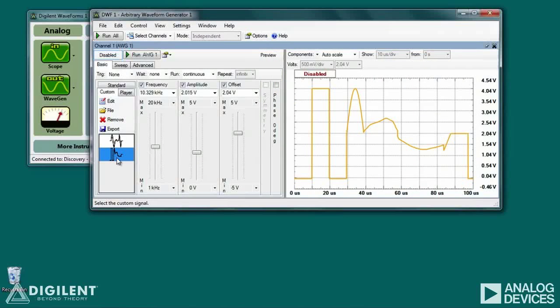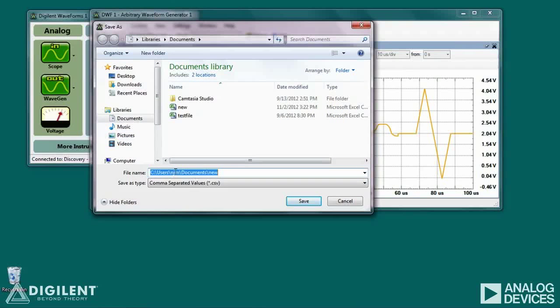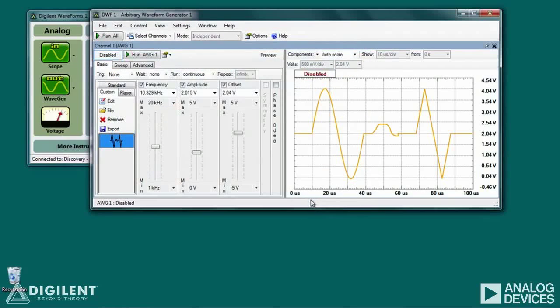The Remove button allows you to remove waveforms from the list of available waveforms. Simply select the waveform you want to delete and click Remove. Finally, a waveform you created can be saved as a file by selecting the file to be saved and clicking on Export. A dialog box will open, allowing you to navigate to the location where the waveform is to be saved. Provide a file name and click Save on this dialog box.